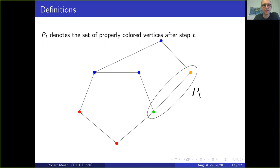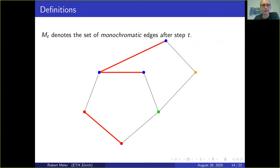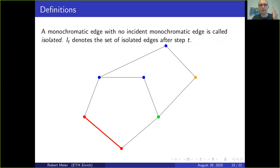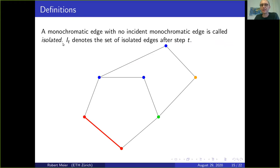We also need some definitions. P_t denotes the set of properly colored vertices after step t. M_t denotes the set of monochromatic edges after step t—all edges whose two endpoints have the same color. A monochromatic edge with no incident monochromatic edge is called isolated, meaning it forms a monochromatic connected component on its own. I_t denotes the set of all isolated edges after step t.